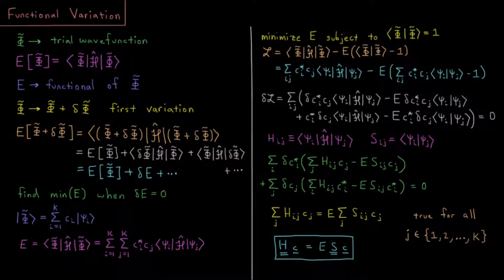This video will discuss what happens when we take some trial wave function and then do functional variation to find the minimum in energy with respect to variations in the wave function.